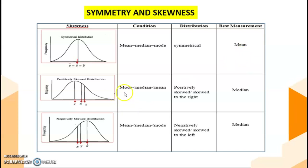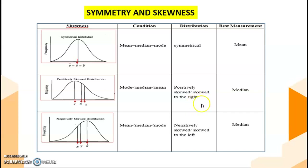Second, if we have mode is less than median, less than mean, the distribution is positively skewed or skewed to the right. The best measurement we are going to use is median.